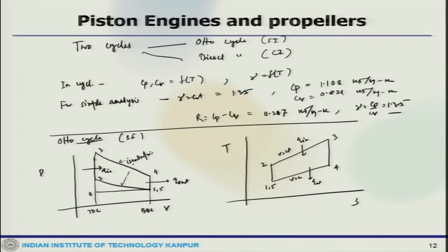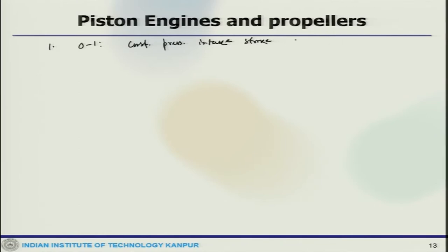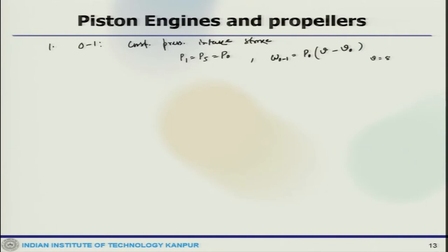The first process, 0→1, is a constant-pressure intake stroke. The intake valve is open and the exhaust valve is closed; the piston makes an intake stroke to draw a fresh charge — a mixture of fuel and air for the SI engine — into the cylinder. This gives P1 = P0, and the specific work is W_01 = P0(V1 − V0), where V is specific volume.